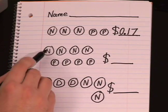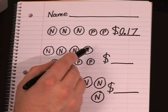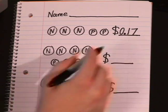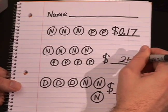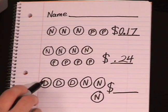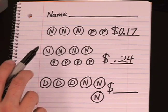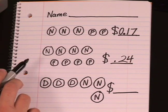And again, 5, 10, 15, 20. Hold it. Stop. Switch. 21, 22, 23, 24. And that is counting with nickels and pennies.